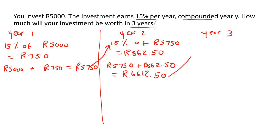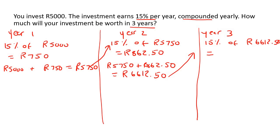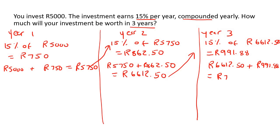That becomes the starting number for your last year. So we're going to say 15% of 6,612.50, and that gives us 991. We're just going to round to two decimal places — 991.88 — and then we add those two numbers together. So that becomes 6,612.50 plus 991.88, and that'll give us 7,604.38 as our final answer.